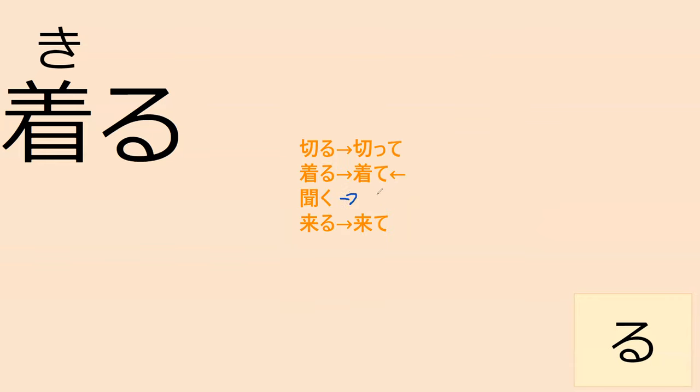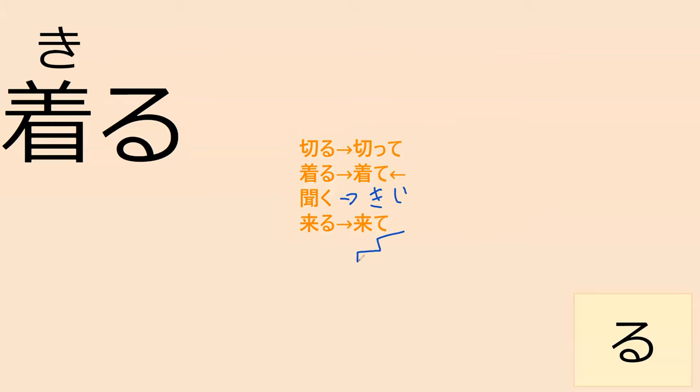You don't see the verb 着る that often in present tense, because normally you're either about to put on clothes or your clothes are already on. The act of putting on the clothes — like you're still in the changing room — is what 着る describes. In the て-form, potentially all four of these (切る, 着る, 来る, 聞く) would sound roughly the same for English speakers, though there could be a pitch accent difference which as a non-native speaker I cannot identify.